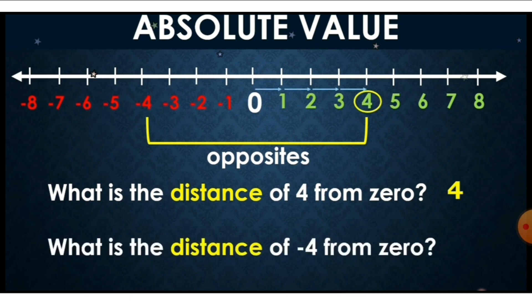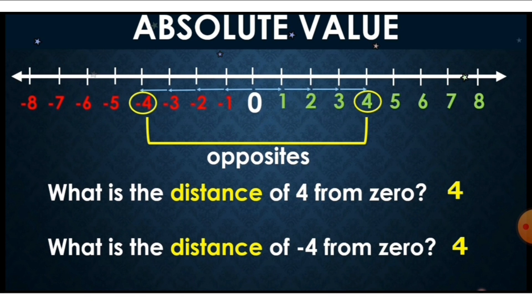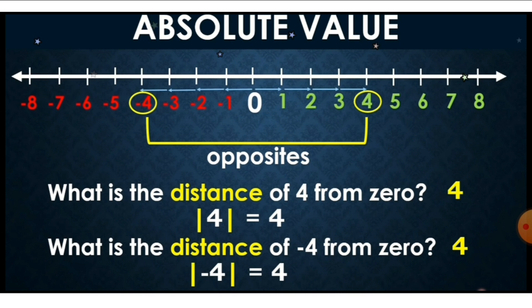What is the distance of negative four from zero? We count the units from zero going to negative four — that is also four. You have noticed that we have the same result. So the absolute value of four equals four, and the absolute value of negative four is also equal to positive four. Since we are talking about distance — how far the number is from zero — the result is always positive.